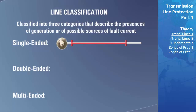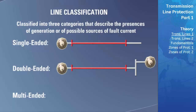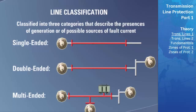A double-ended line has only two boundaries, each of which can have a source of fault current available. This type of line is used to deliver power, usually in different directions at different times. If a fault occurs, current will be fed to the fault from two locations. A multi-ended line has more than two boundaries, each of which can have a source of fault current available. At the time of a fault on this type of line, the direction of normal power flow can be highly variable and the fault will be fed from many different locations.